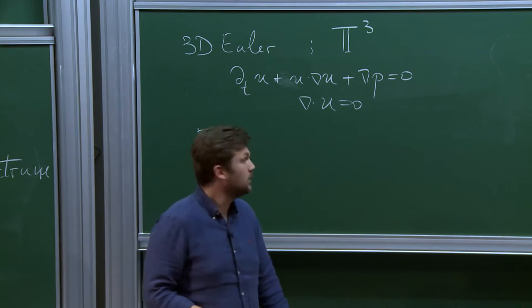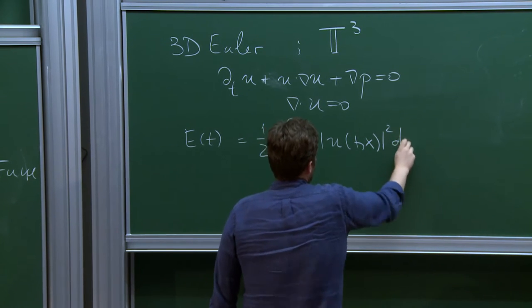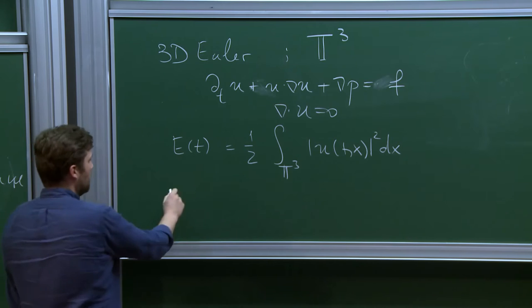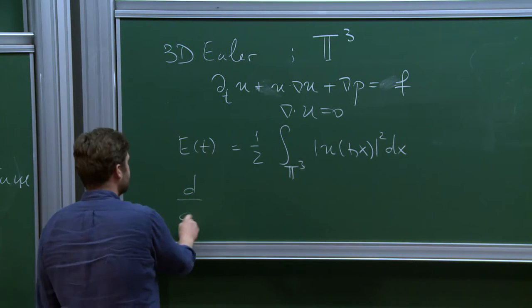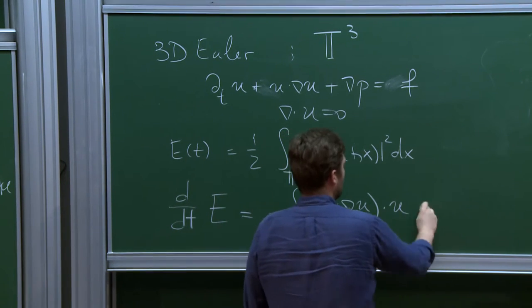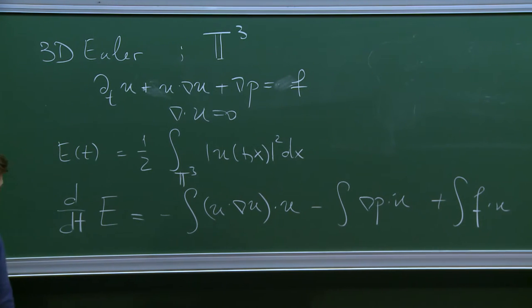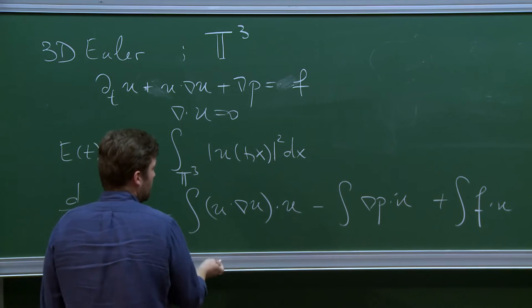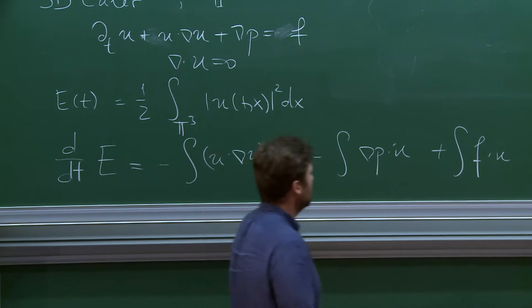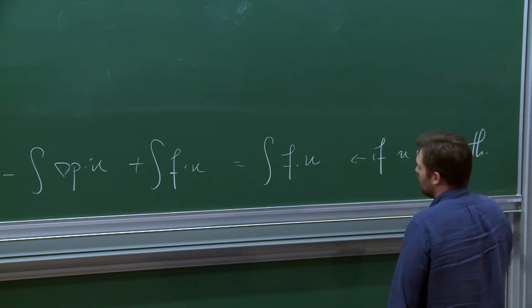The conservation law for 3D Euler is the kinetic energy. If you compute the rate of change of energy in 3D Euler, you get d/dt of E equals minus (u · ∇u) inner product with u minus (∇p · u), and if you want you can include a force. Because of incompressibility — meaning the vector field is divergence-free — you can move terms out and get divergences. If you're allowed to do integration by parts, you get either the energy balance or, if there's no force, energy conservation. This holds if u is smooth, and so the Onsager conjecture deals with how smooth you have to be to do this computation.